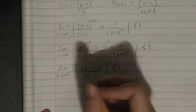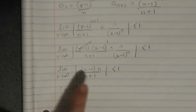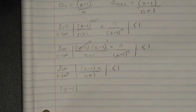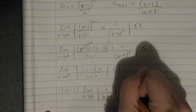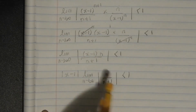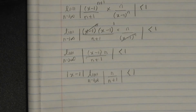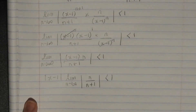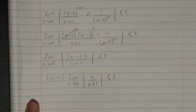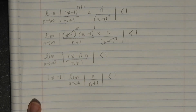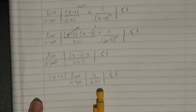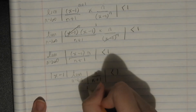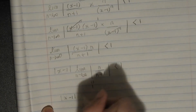This leaves us with |x minus 1| times the limit as n tends to infinity of n divided by (n plus 1), less than 1. We can pull |x minus 1| out of the limit since it has no n value. This limit can look tricky because the bottom is bigger than the top, but consider n equals a million: a million divided by a million plus 1 is very close to 1. As n goes to infinity, that plus 1 becomes insignificant, so the limit equals 1. So we have |x minus 1| less than 1.